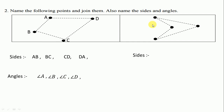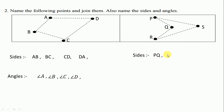First, we label the points P, Q, R, and S. We write the sides starting from this side: PQ, QR, RS, and SP.